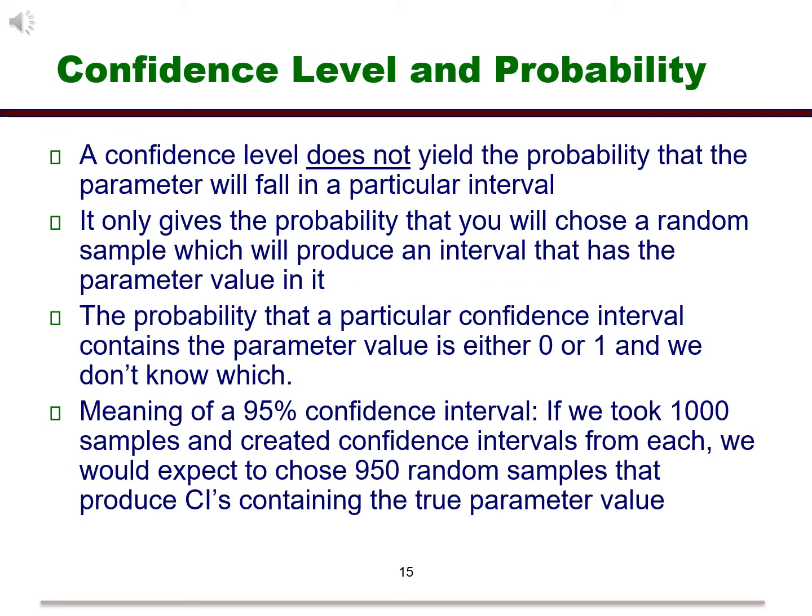There is a misconception about confidence level and probability. They are not the same thing. A 95% confidence interval does not mean that there is a 95% chance that the true value for the parameter is in the interval. It only gives the probability that you will choose a random sample which will produce an interval that has the parameter value in it. The probability that a particular confidence interval contains the parameter value is either 0 or 1, and we don't know which.